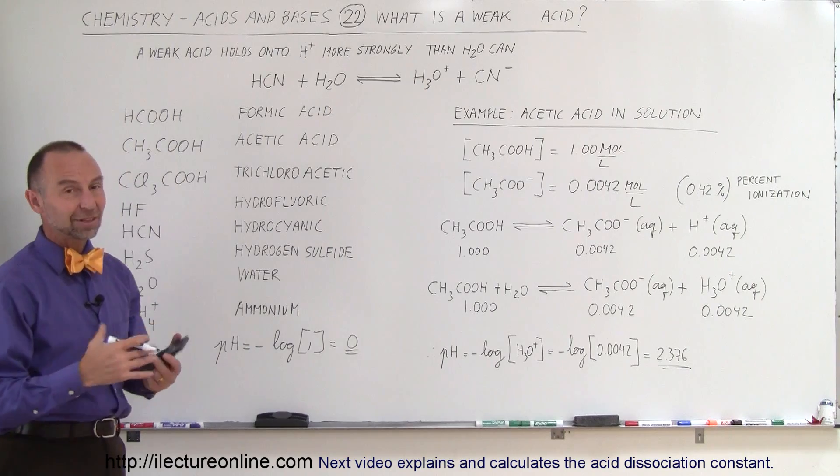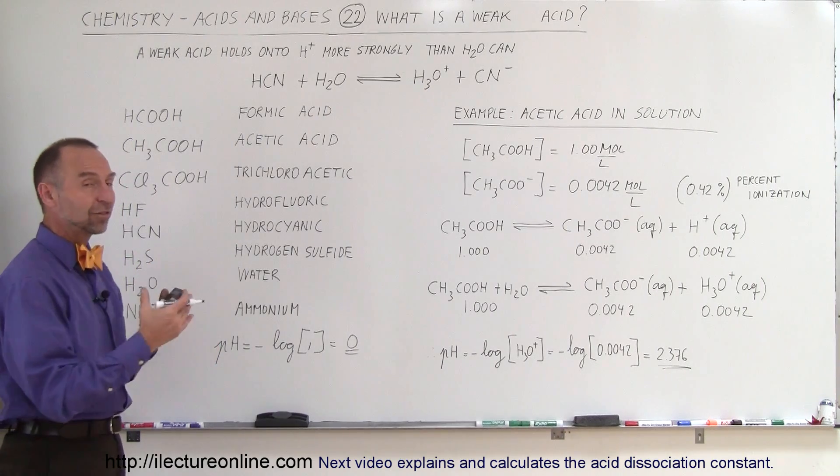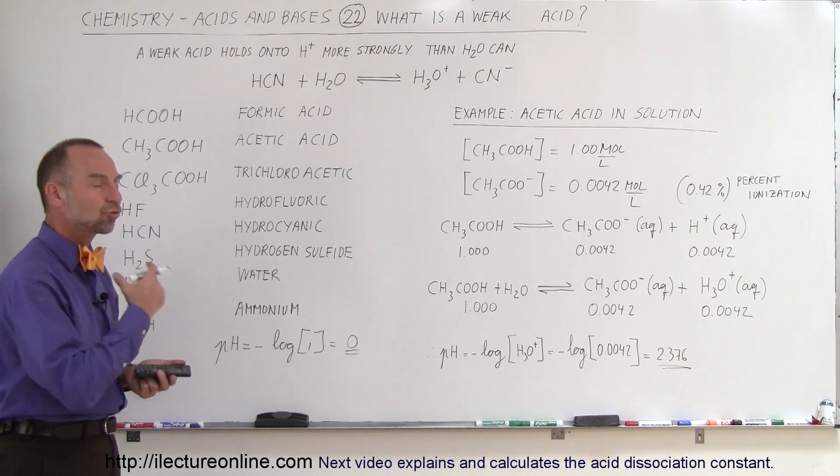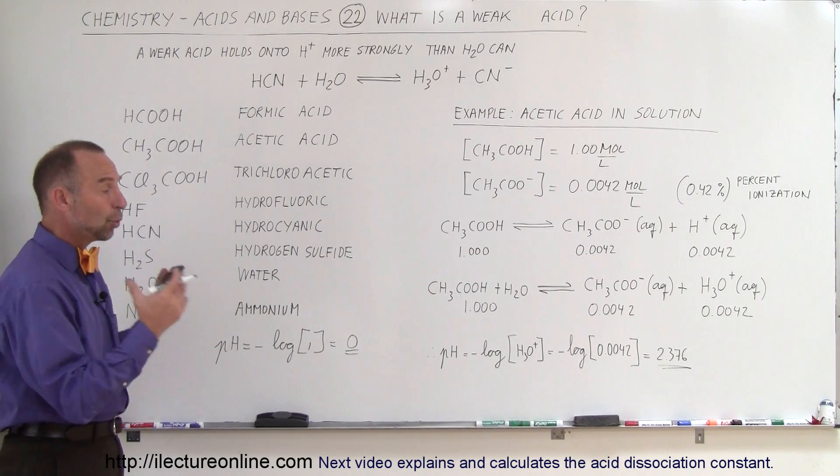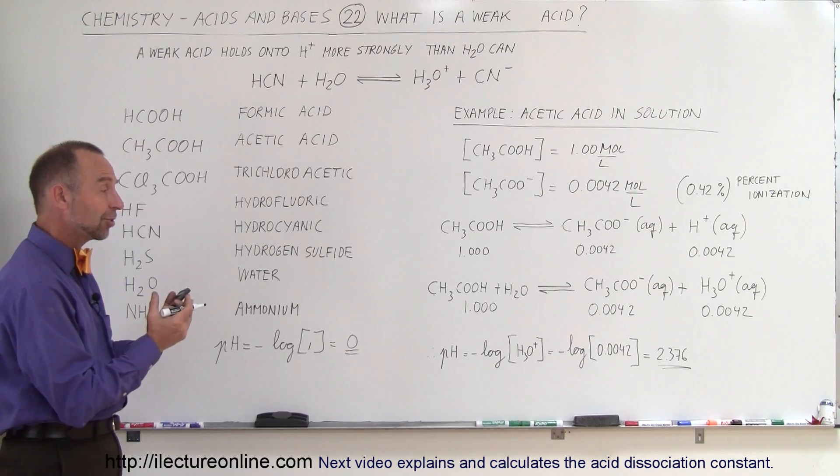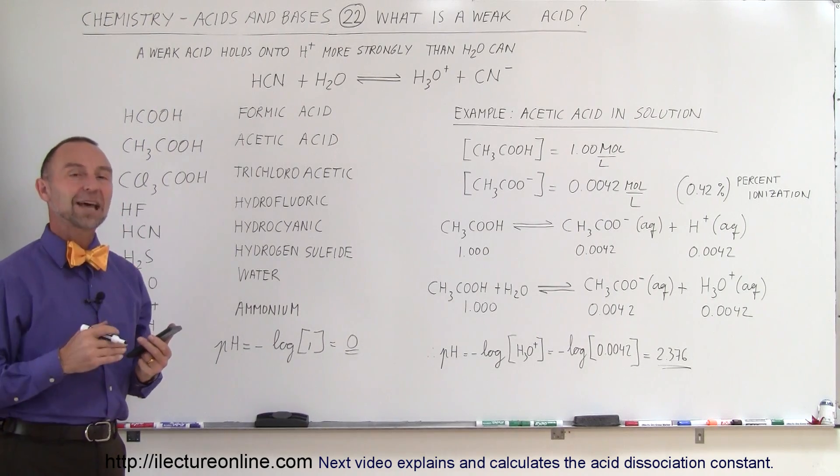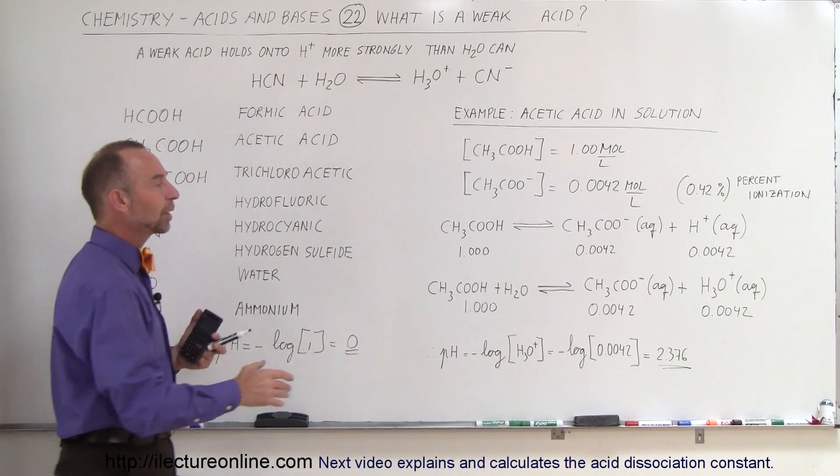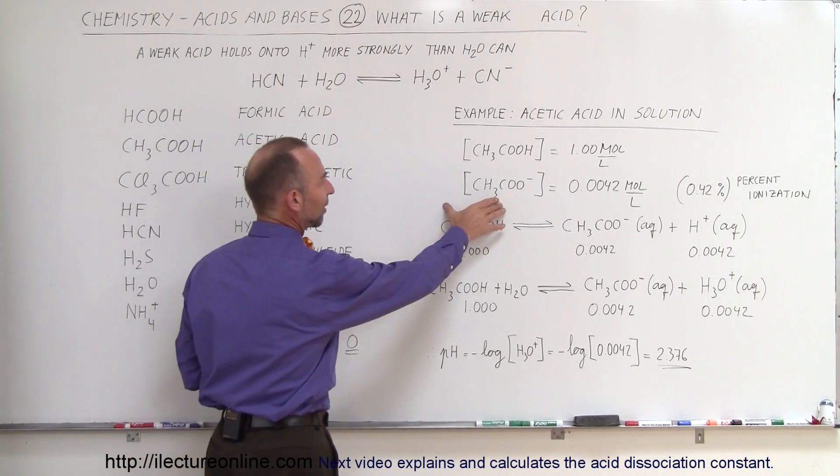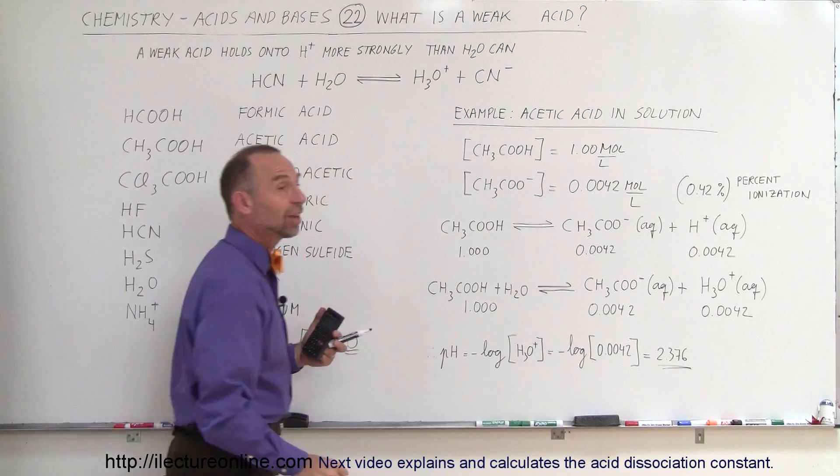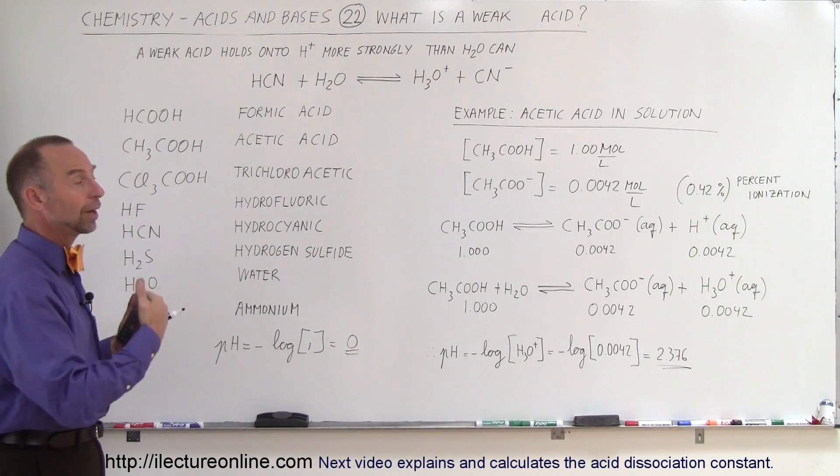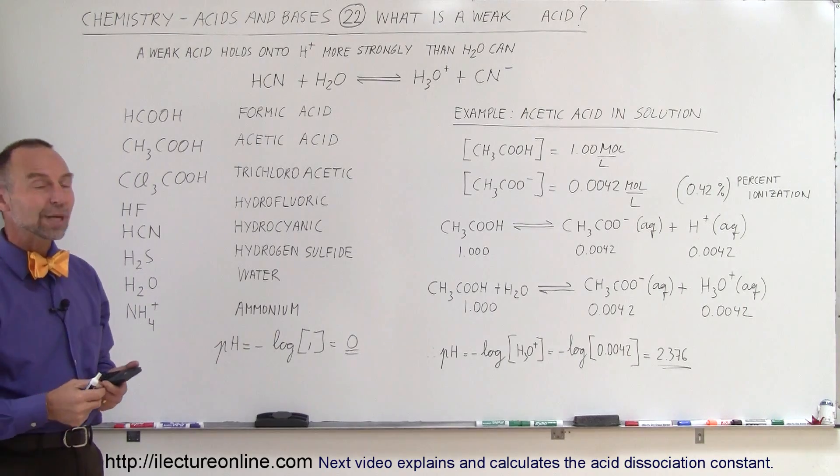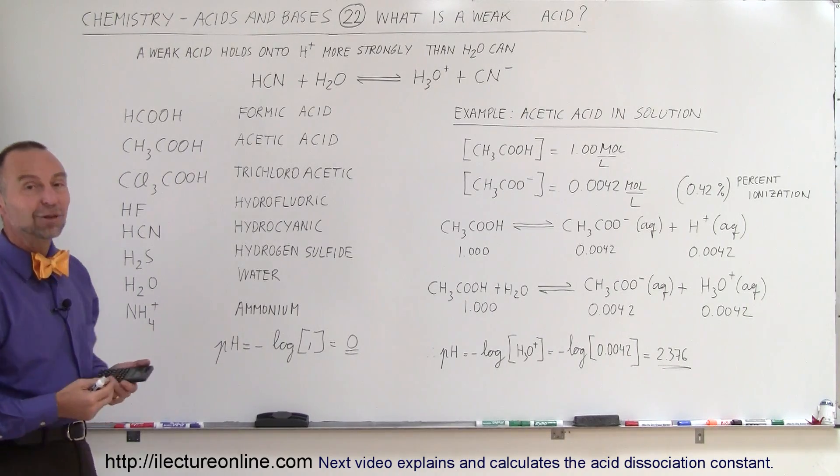Again, a weak acid is very strong at holding on to its hydrogen ion. A strong acid is very weak at holding on to its hydrogen ion. That defines the strength of an acid. The more it hangs on to its hydrogen ion, the weaker the acid is. So the smaller the percentage of ionization, the weaker the acid. The greater percentage of ionization, the stronger the acid. And that's how we look at weak acids and, conversely, strong acids.